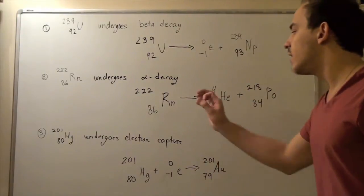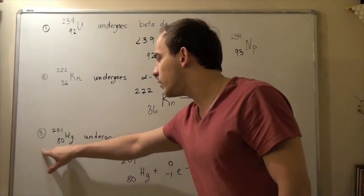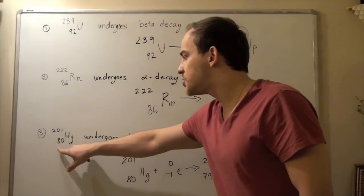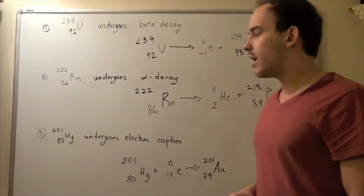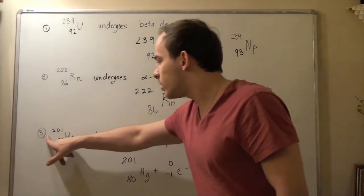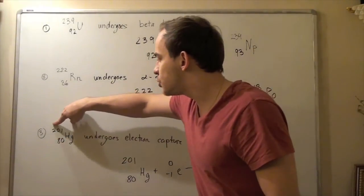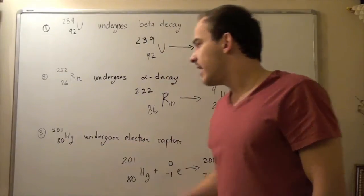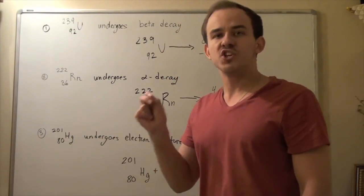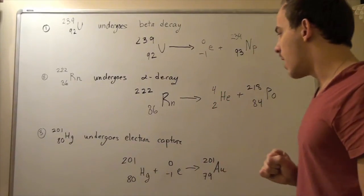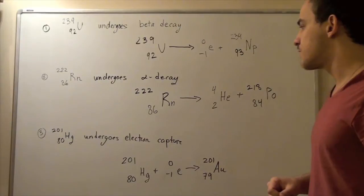Finally, let's look at electron capture. We have the following atom, Hg, which has 80 protons and 201 nucleons. To find our neutrons, we take 201 and subtract 80, and we get 121. So there are 121 neutrons found in this atom, and altogether we have 201 nucleons.